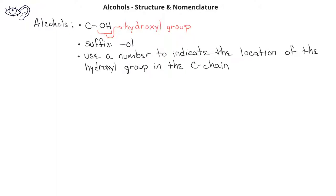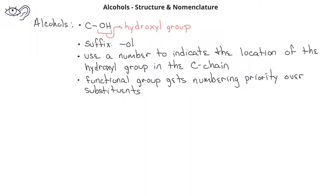If we have both functional groups and substituents, the functional group — in this case the hydroxyl group — gets numbering priority over substituents. Functional groups such as the hydroxyl group also get numbering priority over pi bonds, such as alkenes or alkynes.